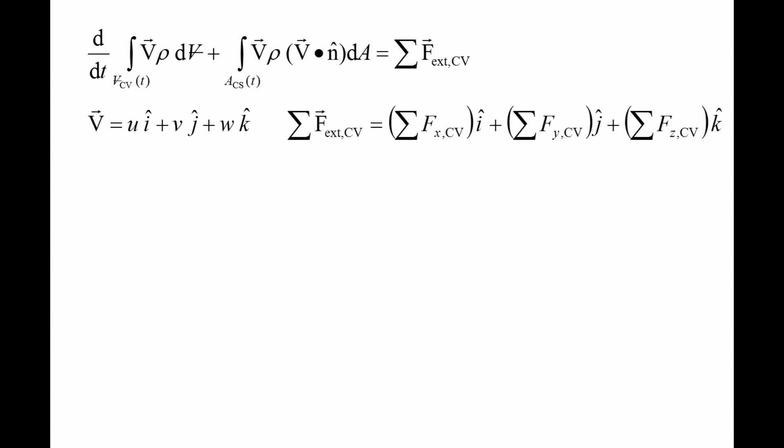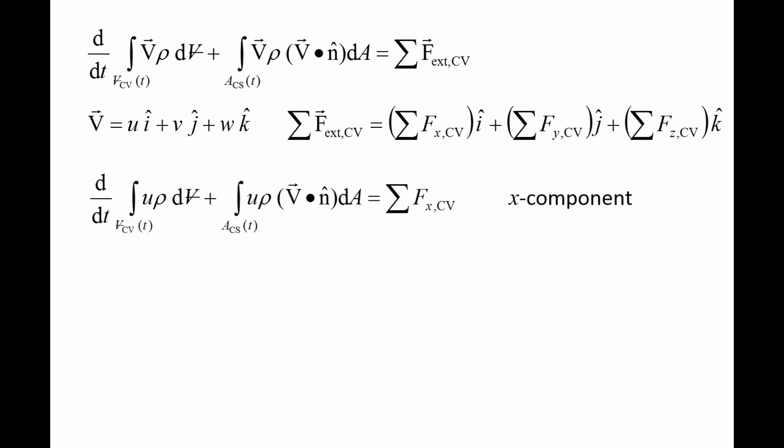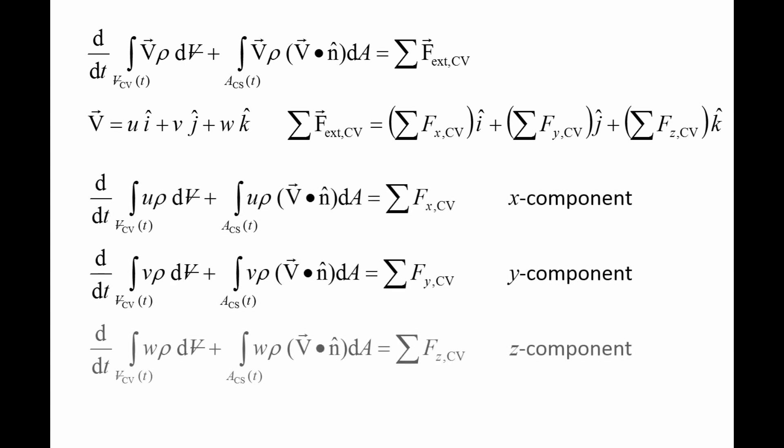The conservation of linear momentum equation is a vector equation. The left side of the equation contains velocity vectors, which have three components. The x-component is lowercase u, the y-component is lowercase v, and the z-component is lowercase w. The right side of the equation contains the sum of the external forces, which also has three components: the sum of the x-components, the sum of the y-components, and the sum of the z-components of the forces. We plug in these vectors and equate the x, y, and z components, so our single vector equation becomes three scalar equations.